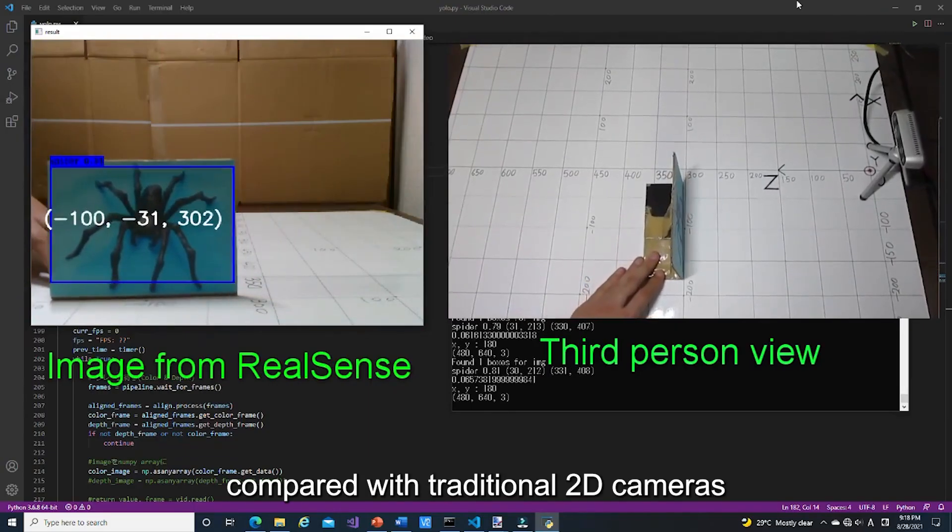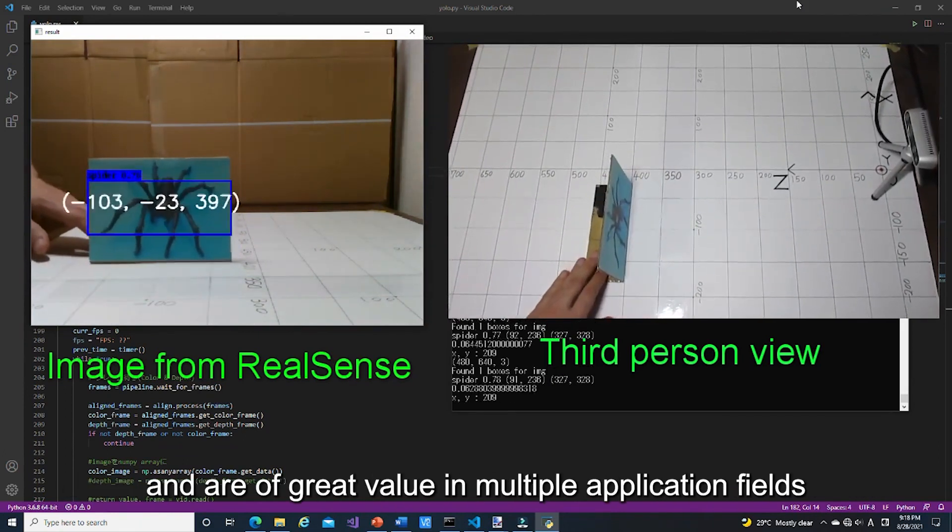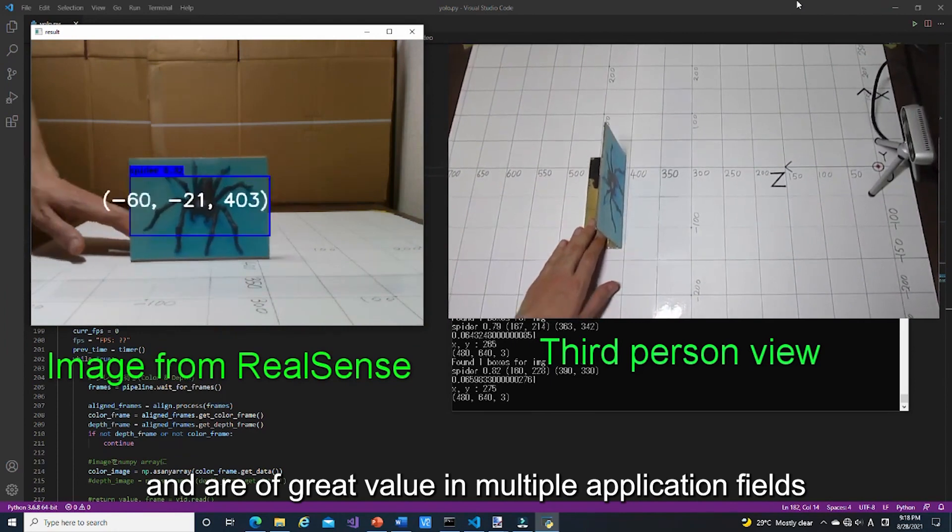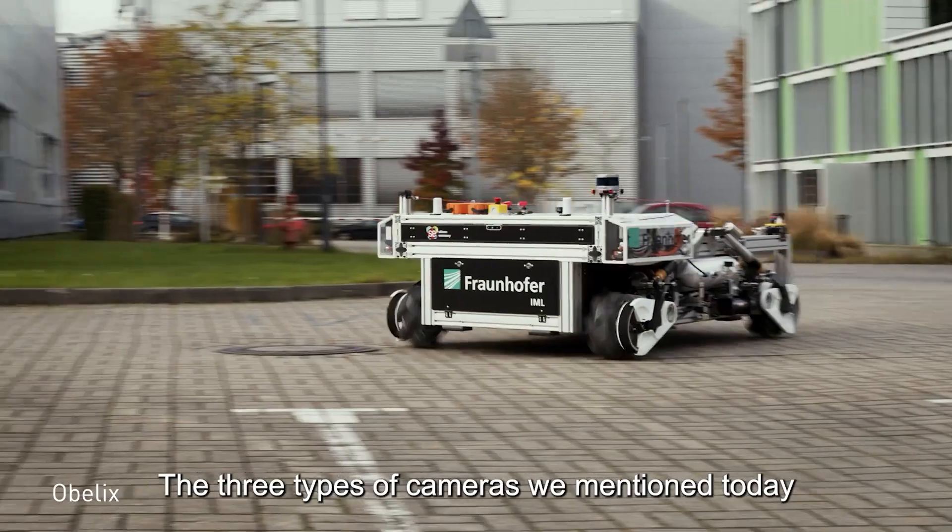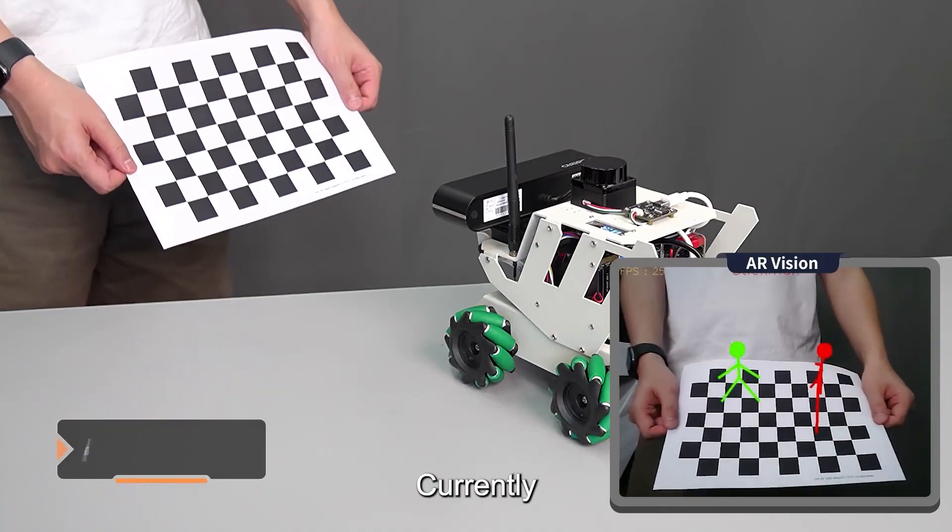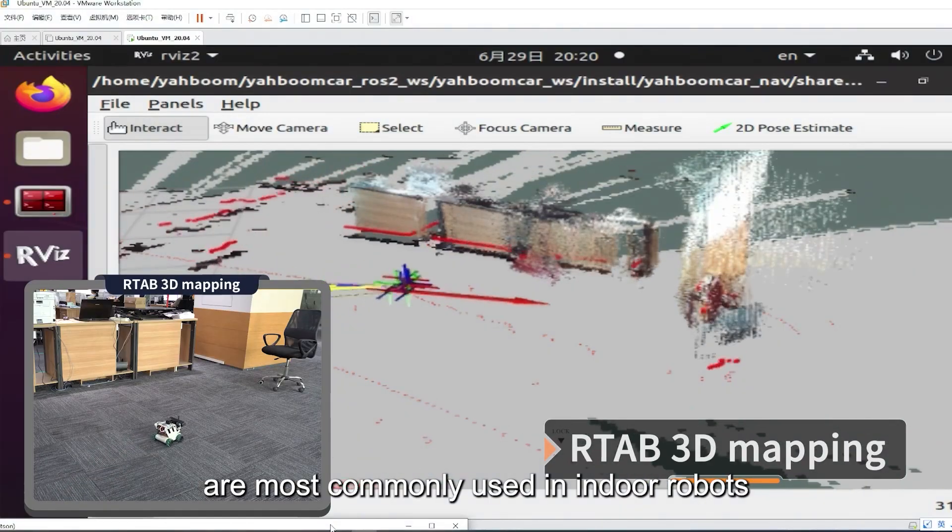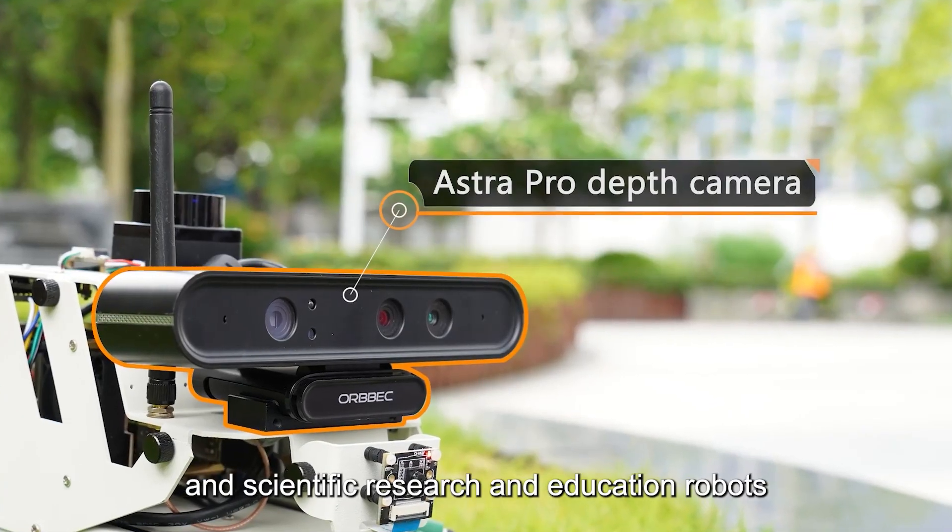In general, compared with traditional 2D cameras, depth cameras can obtain 3D coordinate information of objects and are of great value in multiple application fields. The three types of cameras we mentioned today each have their own advantages and applicable scenarios. Currently, structured light depth cameras are most commonly used in indoor robots and scientific research and education robots.